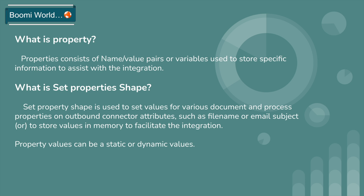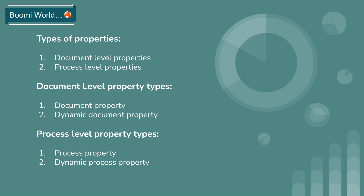Now we'll see what set property shape is. Set property shape is used to set values for various document and process properties, on outbound connector attributes such as file name or email subject, or to store values in memory to facilitate the integration. Most probably we use set property shape to store document values.